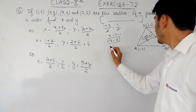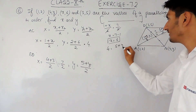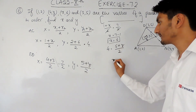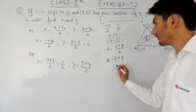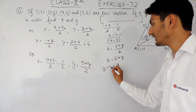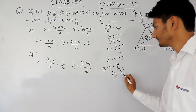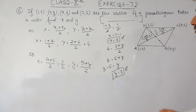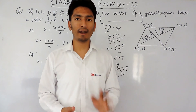Now equating the y-coordinates: 4 = (5 + y) / 2. Cross-multiplying gives 8 = 5 + y. Shifting 5 to the other side: y = 8 − 5 = 3. So the value of y is 3. Therefore, the values of x and y are 6 and 3 respectively, given that these 4 points are the vertices of the parallelogram.